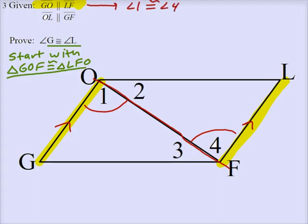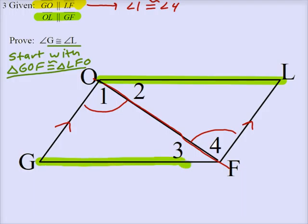Next piece of given information is that OL is parallel to GF. OL refers to this segment. GF refers to this segment. And they're still cut by that red transversal. However, the angles that are congruent because of that fact are different. Angle 2 is created by a green line. Angle 3 is created by a green line. And so that means that angles 2 and 3 are congruent because OL is parallel to GF.